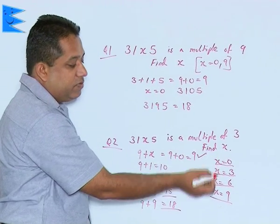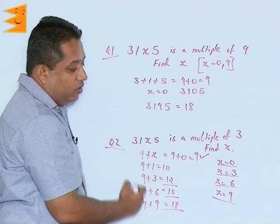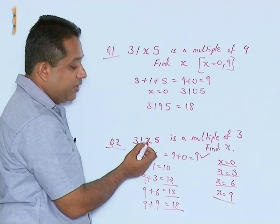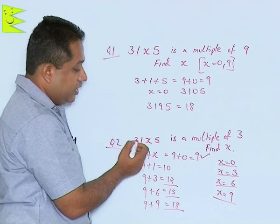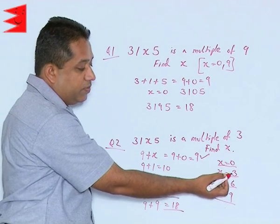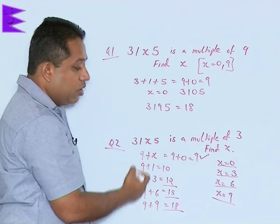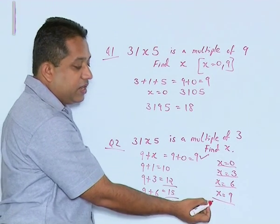So all the answers will lie between 0 and 9. And in this particular question we saw 4 values of x could satisfy this given condition that 31x5 is a multiple of 3. So x could be 0, x could be 3, x could be 6 and x could be 9. So we have to discuss all the cases and write the final answer like this.